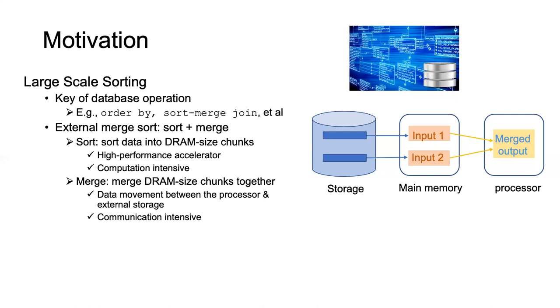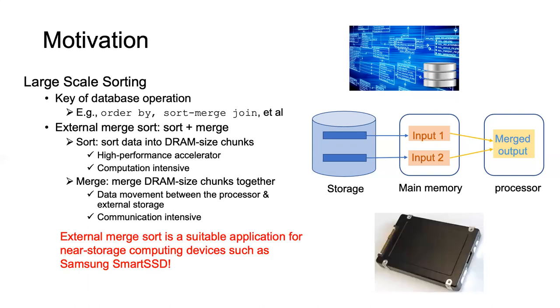In the sorting phase, we first sort the data into DRAM-scale chunks, and then in the merging phase we merge these DRAM-scale chunks together into the final result. We find that external merge sort is a suitable application for near-storage computing devices such as the newly-released Samsung Smart SSD. Why? Because we can accelerate the computation-intensive sorting phase with customized FPGA accelerator while avoiding unnecessary data movement between the host and storage.